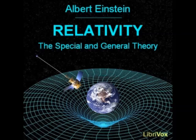In their universe, the individual rods always represent the same distance, independently of their position. Let us consider now a second two-dimensional existence, but this time on a spherical surface instead of on a plane. The flat beings with their measuring rods and other objects fit exactly on the surface, and they are unable to leave it. Their whole universe of observation extends exclusively over the surface of the sphere. Are these beings able to regard the geometry of their universe as being plain geometry and their rods as a realization of distance? They cannot do this, for if they attempt to realize a straight line, they will obtain a curve, which we three-dimensional beings designate as a great circle, i.e. a self-contained line of definite finite length, which can be measured up by means of a measuring rod.